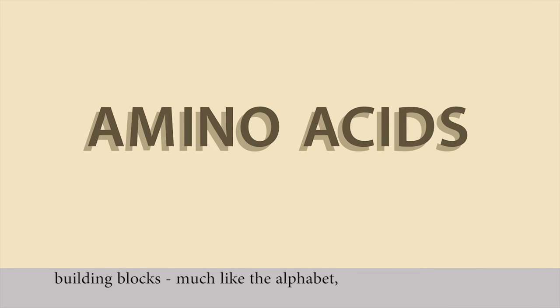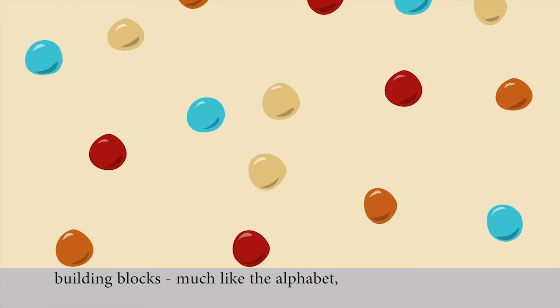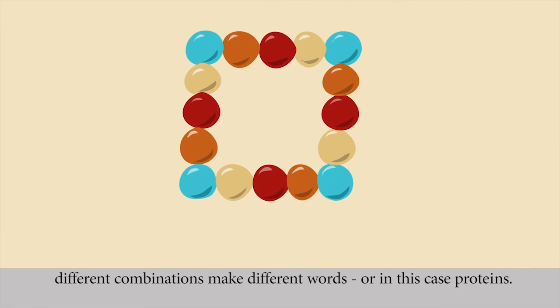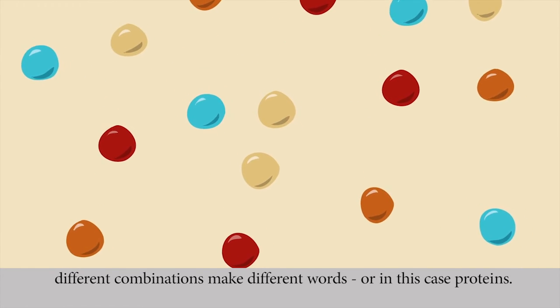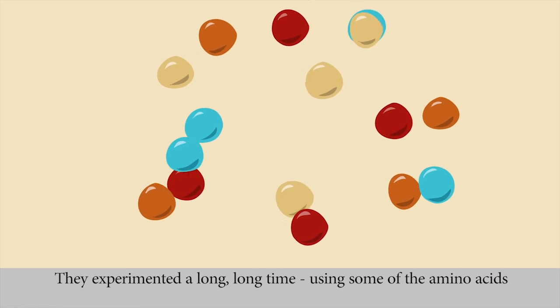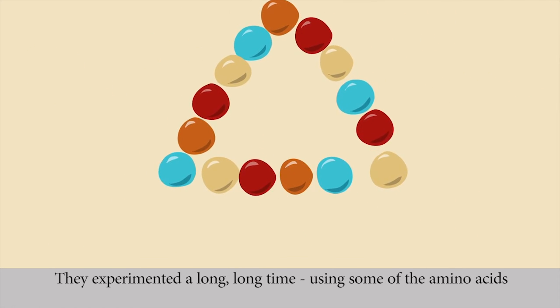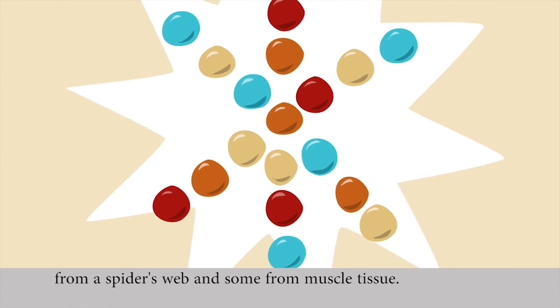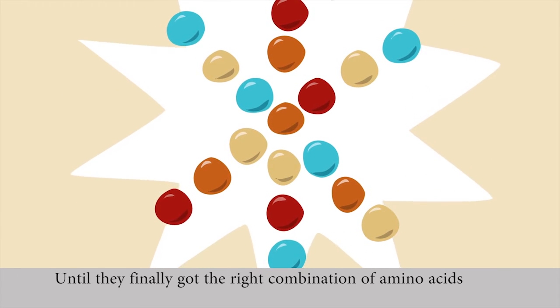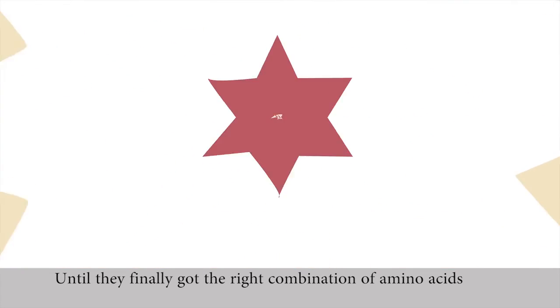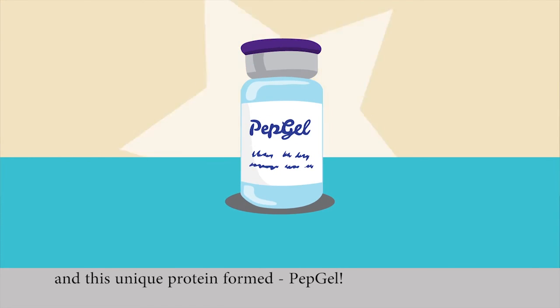Amino acids are building blocks, much like the alphabet. Different combinations make different words, or in this case, proteins. They experimented a long time, using some of the amino acids from a spider's web and some from muscle tissue, until they finally got the right combination of amino acids. And this unique protein formed PEPGEL.